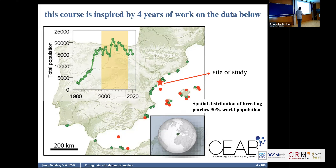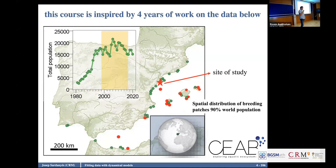Here you can see two things. The red dots show the distribution of this species until 1997, when the predators invaded the patch at La Banya where we had the largest population. When predators invaded and individuals started leaving, they were colonizing the places shown in green. Here you have the total population across all patches. Since populations are large, noise is not important — but this is an assumption.